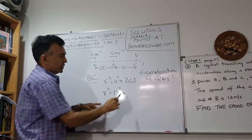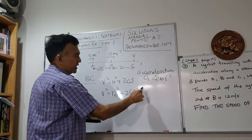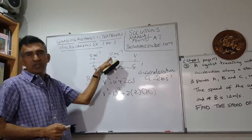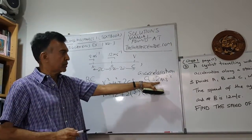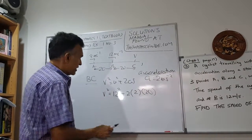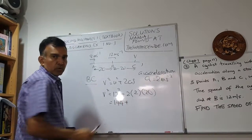I've got 12 squared for the initial velocity, and then the acceleration which I found in the earlier part, which is 2, and I know my distance here is 20. This will be 144 plus 4 times 20 is 80.